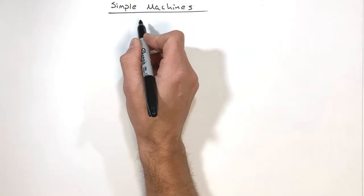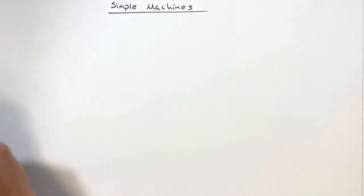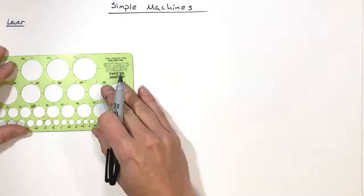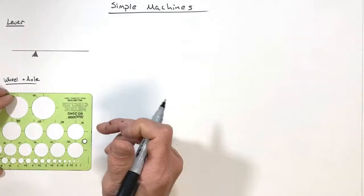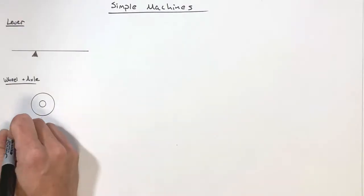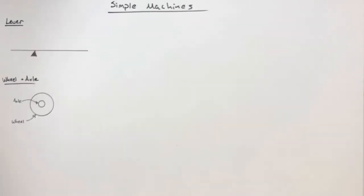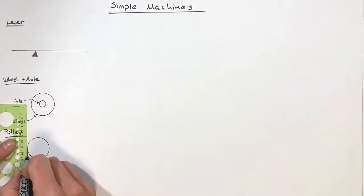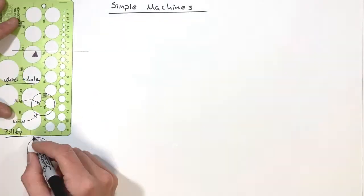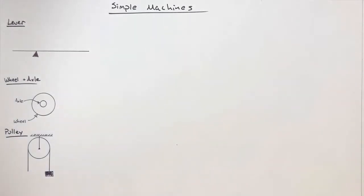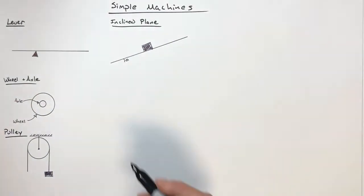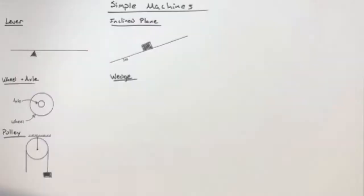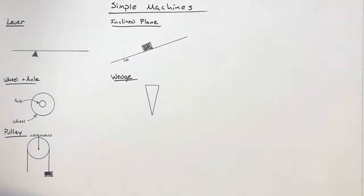Today we're talking about simple machines. There are six different types of simple machines: the lever, the wheel and axle, the pulley, the inclined plane, the wedge, and the screw.